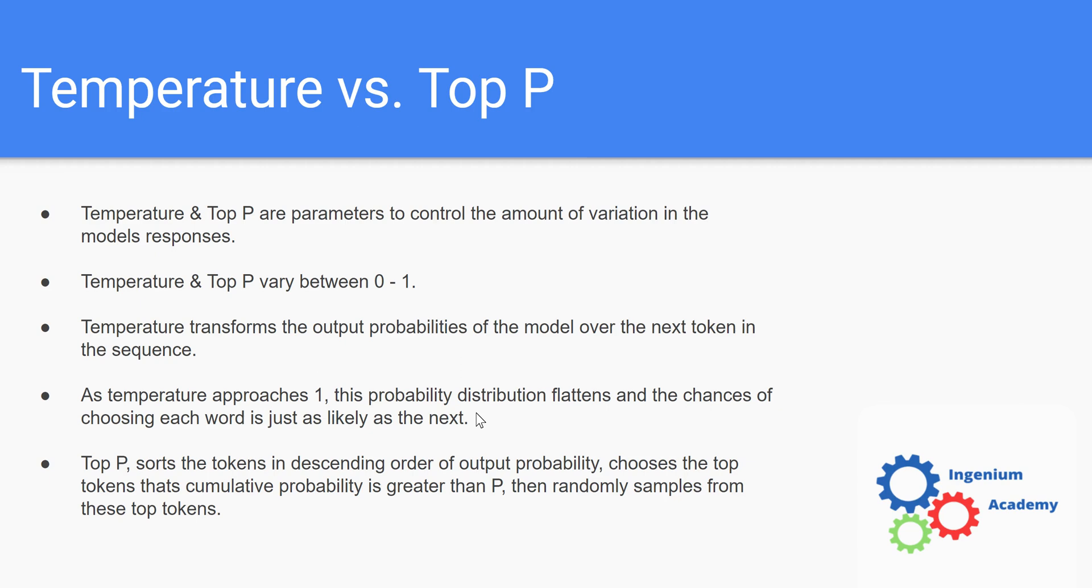Now when we go to changing top P, top P is going to sort all of those words with their probabilities in descending order, with the highest probability at the front. Then it's going to start choosing words until eventually the cumulative sum of the probabilities of those words is actually higher than the P parameter that we choose.